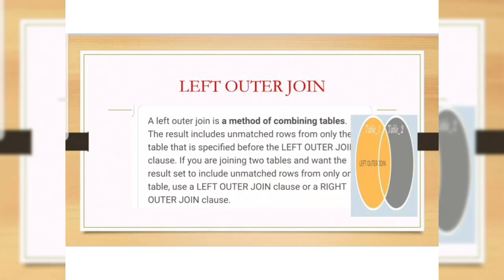Left outer join. A left outer join is a method of combining tables. The result includes unmatched rows from only the table specified before the left outer join. If you are joining two tables and the result set includes unmatched rows from only one table, use a left outer join or right outer join.